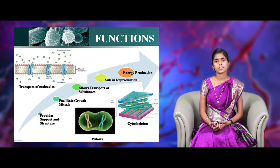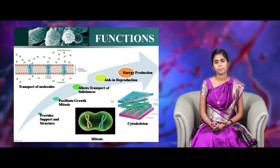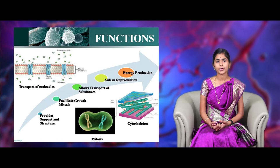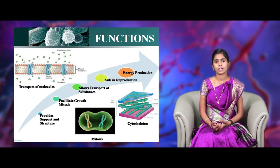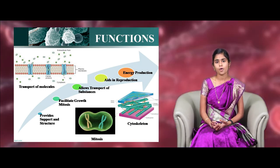First, it provides the support and structure with the help of cell wall and cell membrane. And second, it facilitates the growth of an organism by the process of mitosis. In this process, parent cells divided into two daughter cells. In third, it aids in the reproduction process with the help of mitosis and meiosis. In mitosis, parent cells divided into two daughter cells. But in the process of meiosis, the daughter cells are divorced from the parent cells genetically.